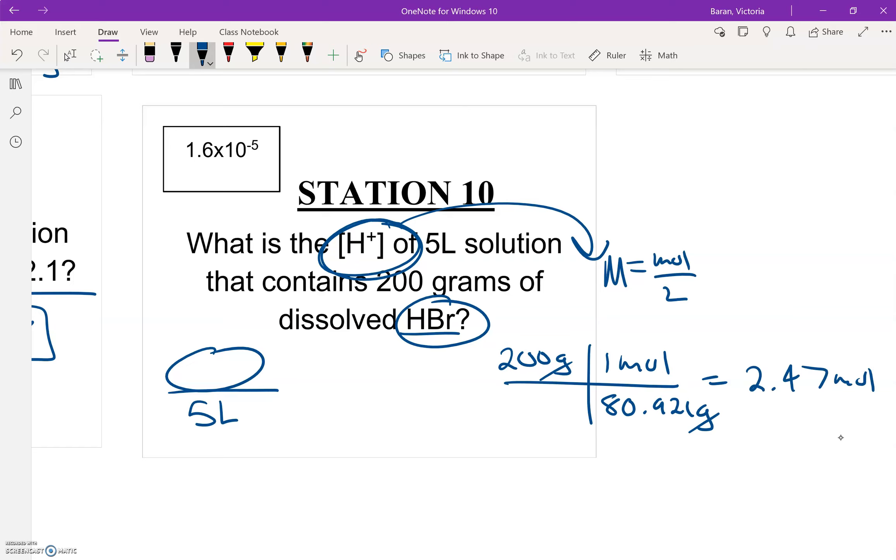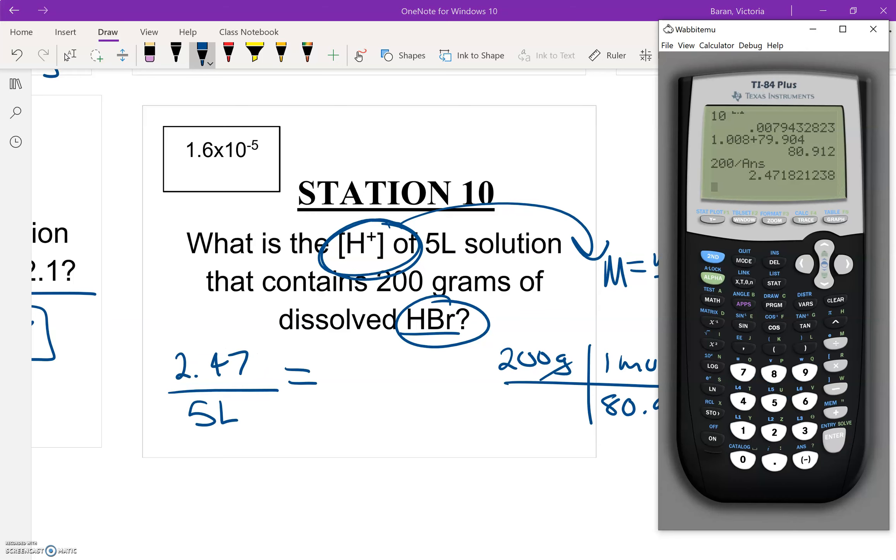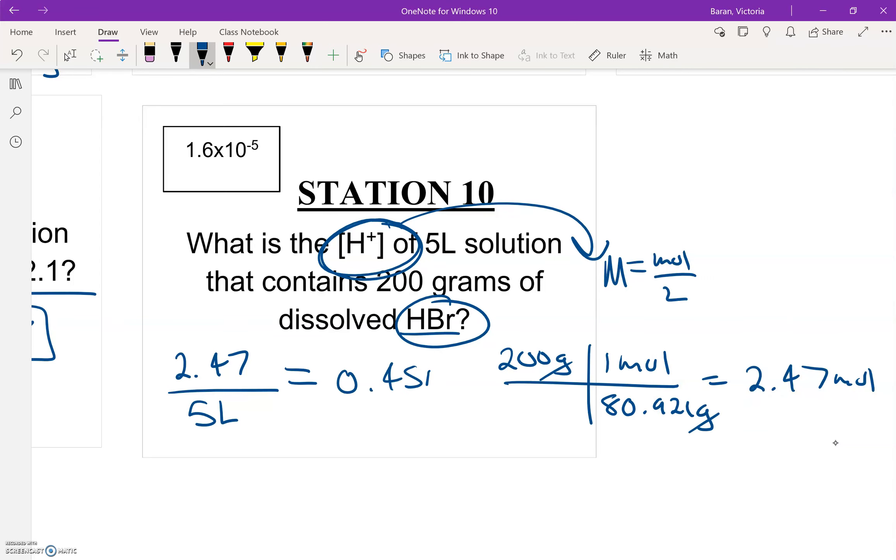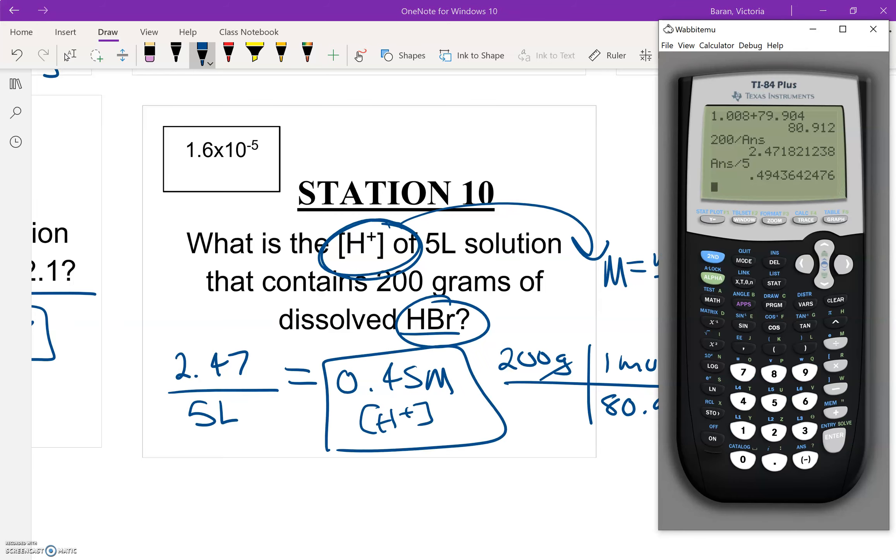So that's how many moles I have, and I'm going to go ahead and plug that in, 2.47. I'm just going to do that divided by 5, and we're going to get 0.49. And that would be big M, which is our [H+] concentration, and that would be my final answer.